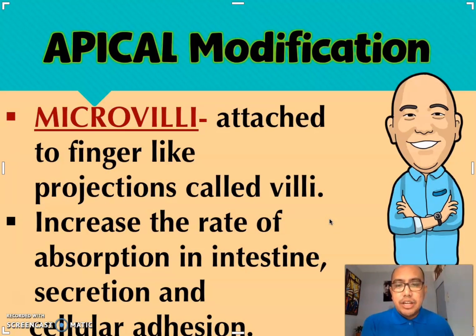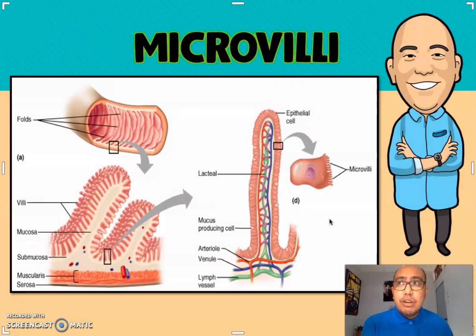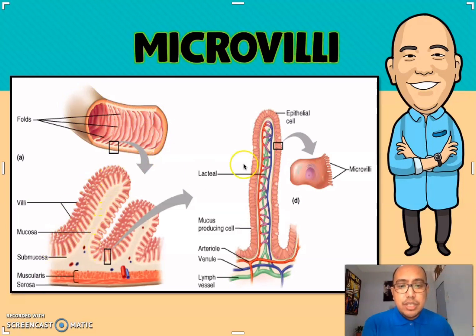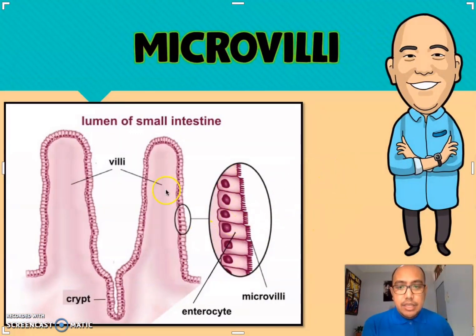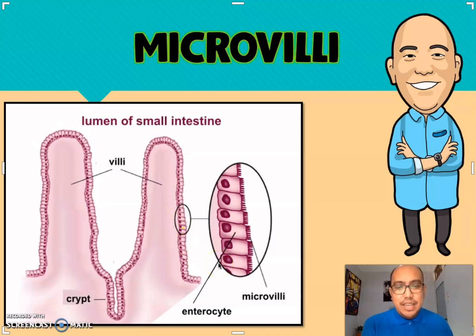The third type of apical modification is the microvilli. Microvilli are finger-like projections that increase the rate of absorption in our intestines, and also function in secretion and cellular adhesion. In the image, we have the lining of our intestines — the close-up picture shows the villi or finger-like projections, and on the villi we have the small parts known as microvilli that aid in the absorption of nutrients.